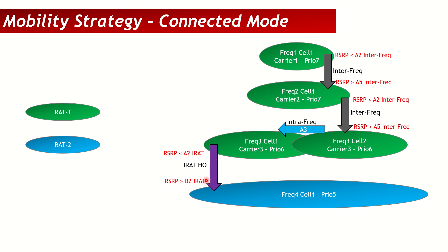In summary, a handover happens in connected mode — both the source and target cells know the UE is moving. The source cell reserves resources on the target cell and sends an RRC Reconfiguration (handover command), and the UE responds with RRC Reconfiguration Complete to the target. In idle mode reselection, neither cell knows — the UE decides by itself and moves without any network involvement.